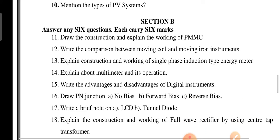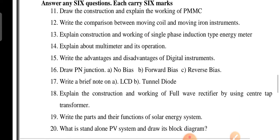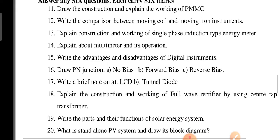Next are the Section B questions. Draw the construction and explain the working of PMMC; comparison between moving coil and moving iron instruments; explain construction and working of single phase induction type energy meter; explain about the multimeter and its operations; and advantages and disadvantages of digital instruments.